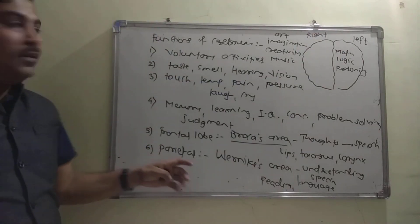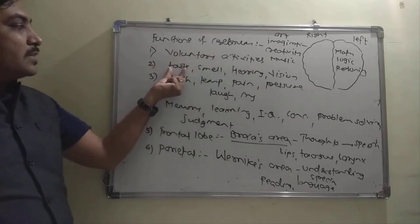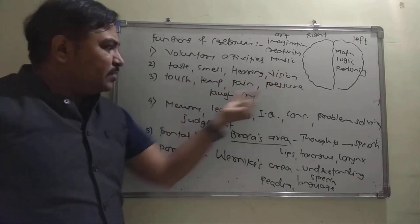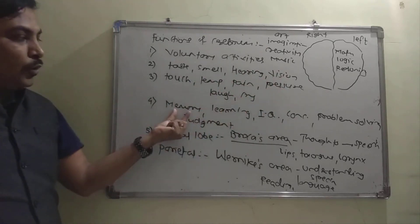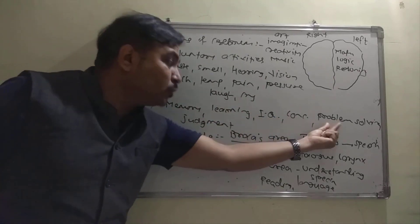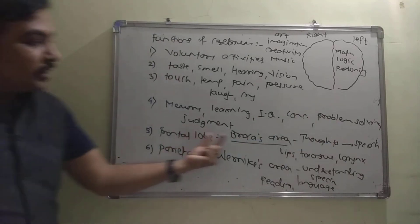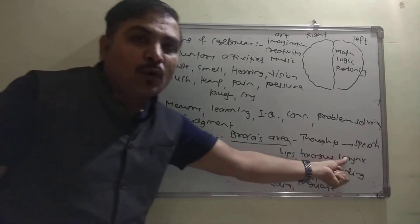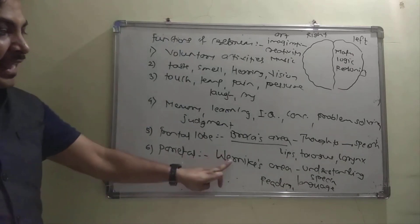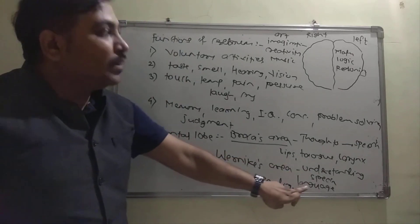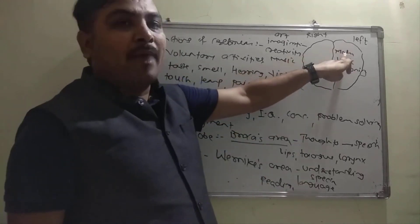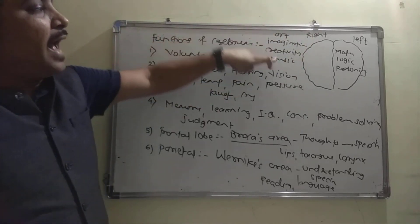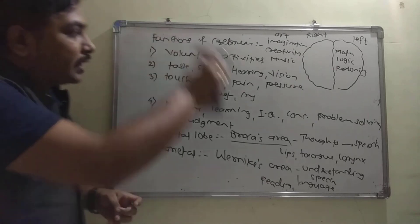To summarize cerebrum functions: it controls voluntary activities, senses (taste, smell, hearing, vision), general sensations (touch, temperature, pain, pressure), emotions (laughing, crying), memory, learning, intelligence, concentration, problem solving, and judgment. The frontal lobe has Broca's area (thoughts to speech; controls lips, tongue, vocal cords). The parietal lobe has Wernicke's area (understanding speech, reading, language). Left hemisphere: mathematics, logic, reasoning. Right hemisphere: art, imagination, creativity, music awareness.